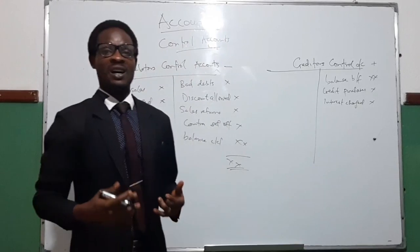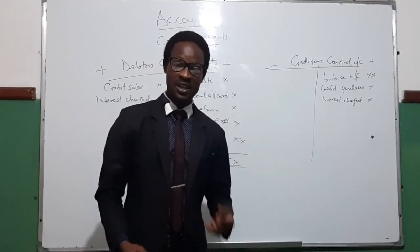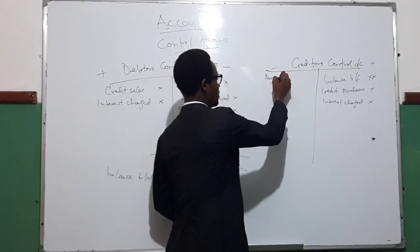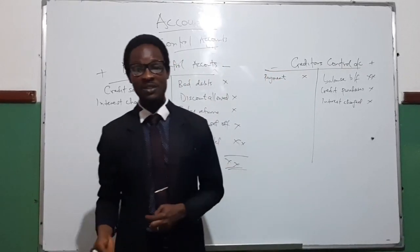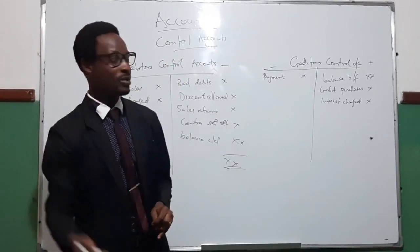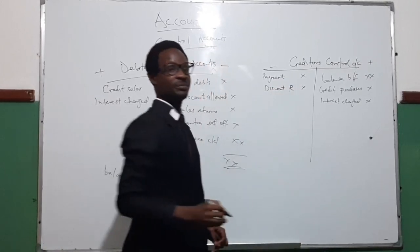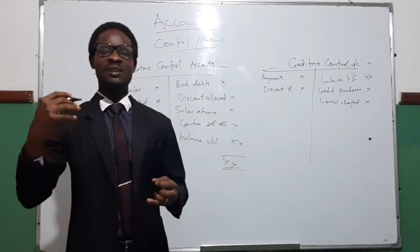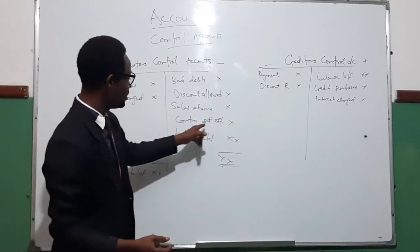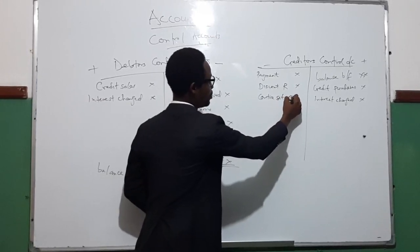Items that will reduce the value owed to creditors will be in the debit side of the creditors control account. These include payment to creditors — cash or bank transfers to creditors will reduce the amount owed to creditors. Discount received will also reduce the amount to be paid to creditors, so it comes to the left-hand side, which is the debit side. Also, when a sales ledger balance is transferred to the purchase ledger — meaning when a debtor is the same as a creditor — if you reduce the amount in the debtors account, at the same time you reduce the amount in the creditors account. That is called a contra set-off.